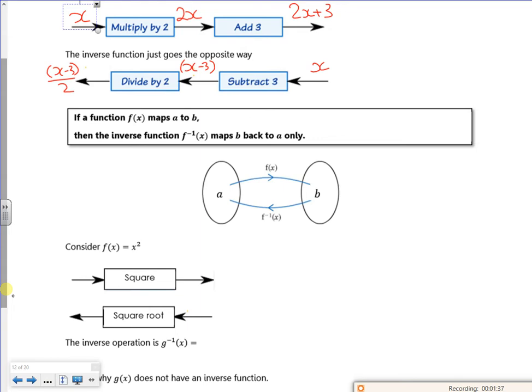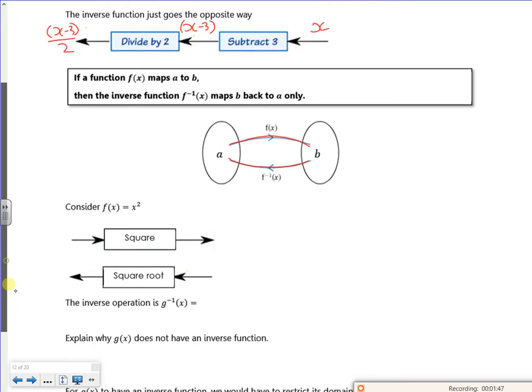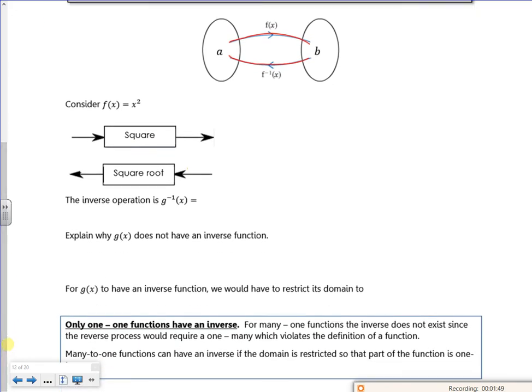So we've got a mapping that goes from a to b and the inverse takes me back there.